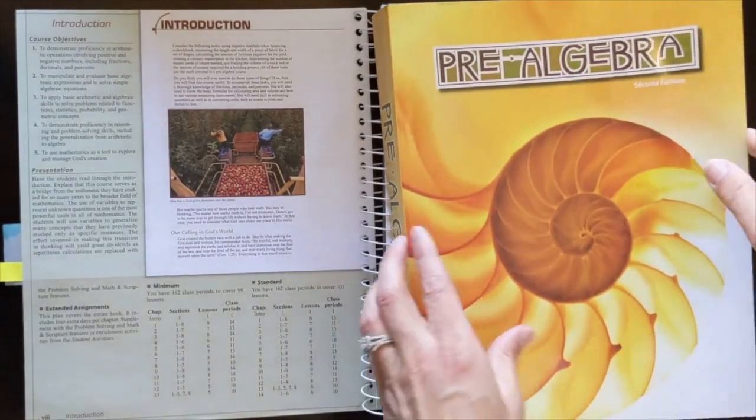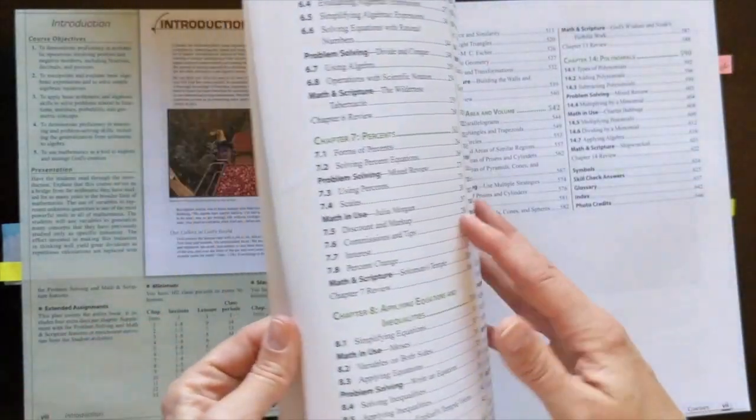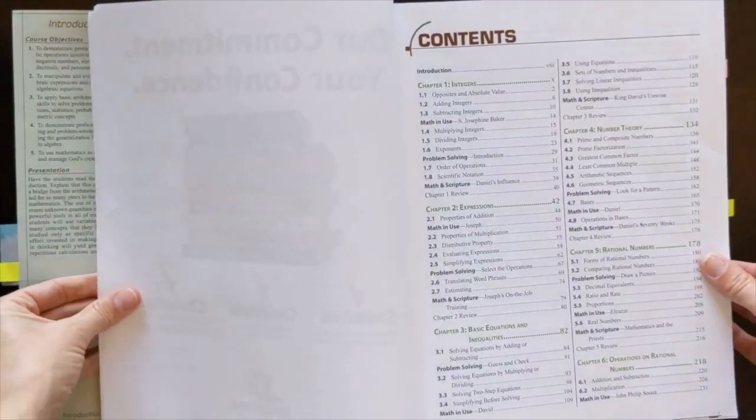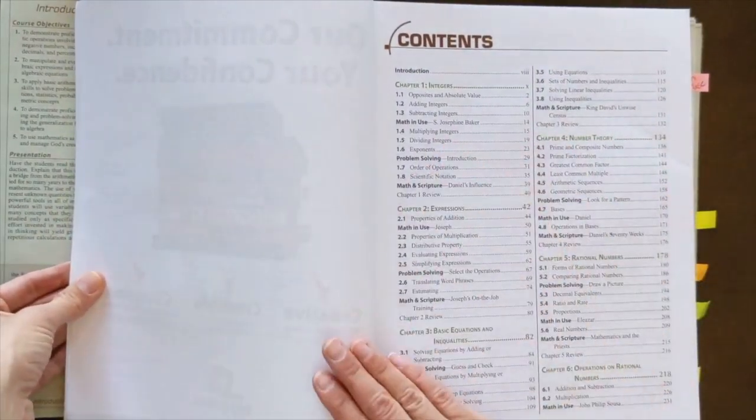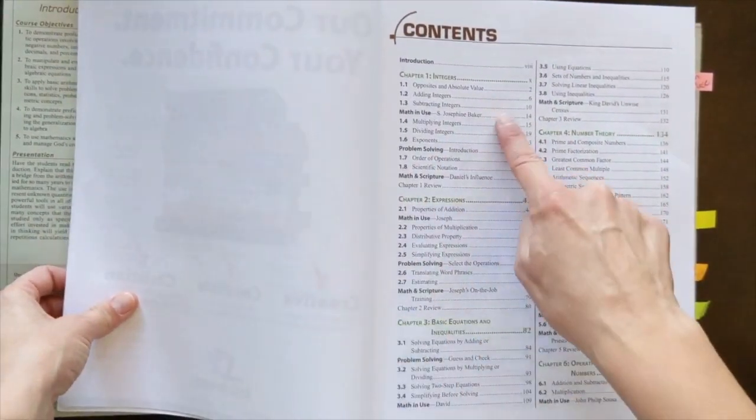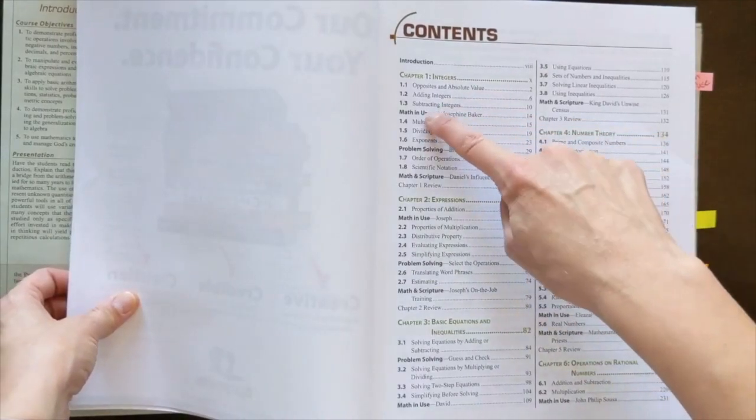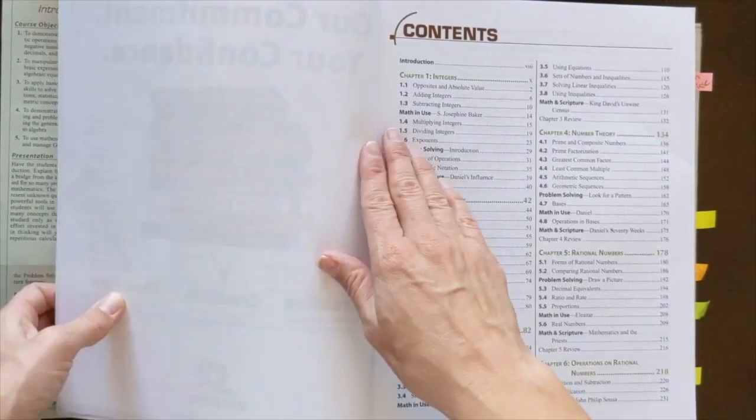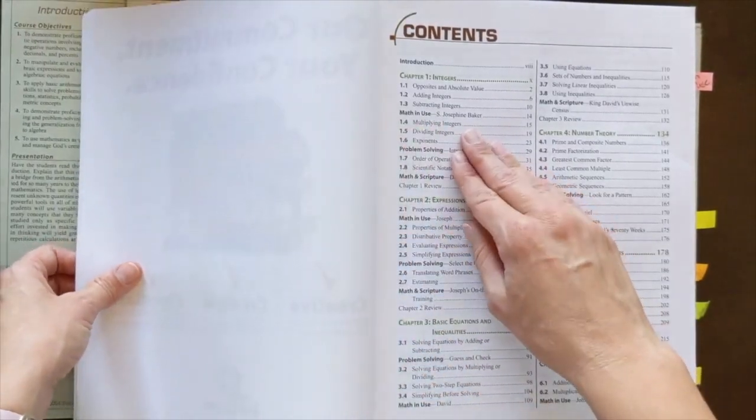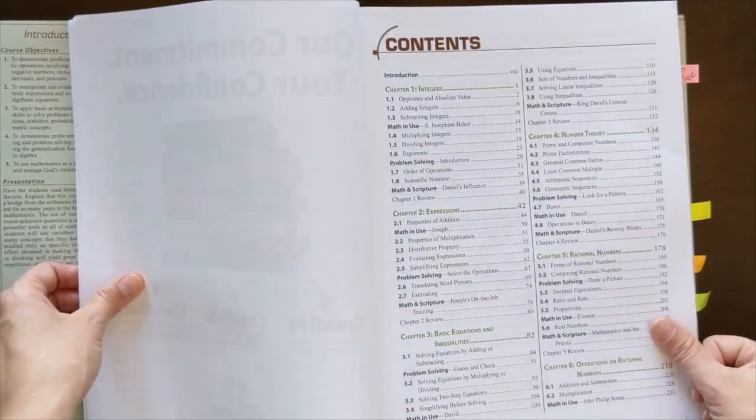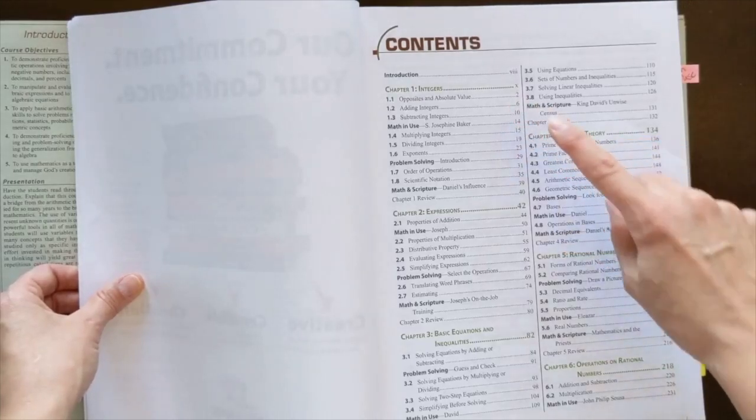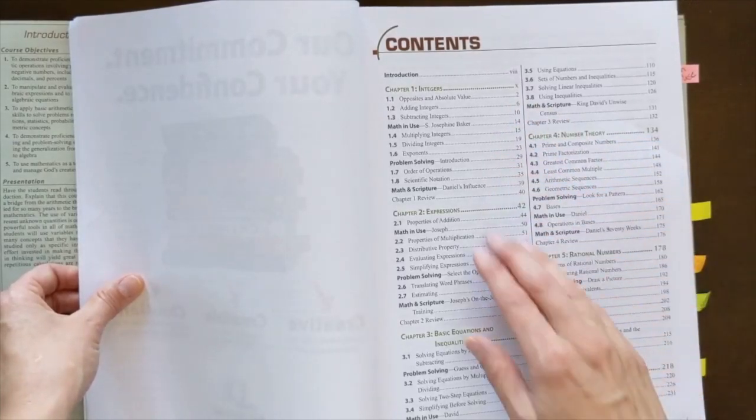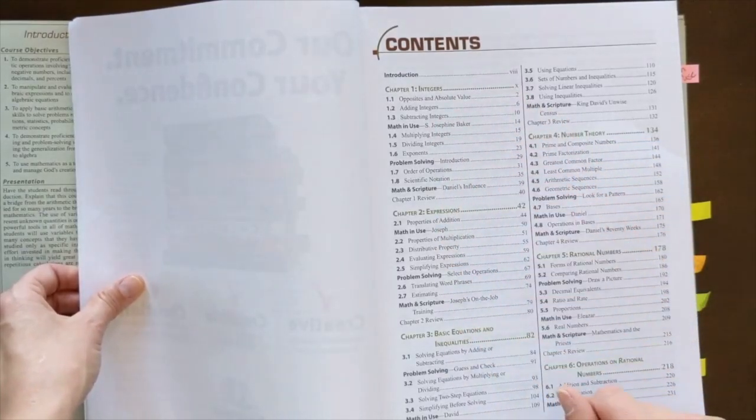If you look at the table of contents here, you'll see that chapter one is integers and we're going to work through here the math and use that we're going to talk about later, which is just fantastic, especially for kids that want to know the why behind math and maybe need that extra encouragement, problem solving, math and scripture. These are all blended into each of these chapters.